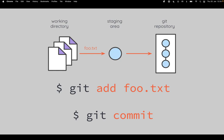The third state is the actual Git repository — a chain of snapshots of changes over time. To move a changed or new file from the working directory into the staging area, use 'git add' followed by the filename. Then 'git commit' creates a commit — a snapshot with metadata and a message — containing all the changes accumulated in the staging area.